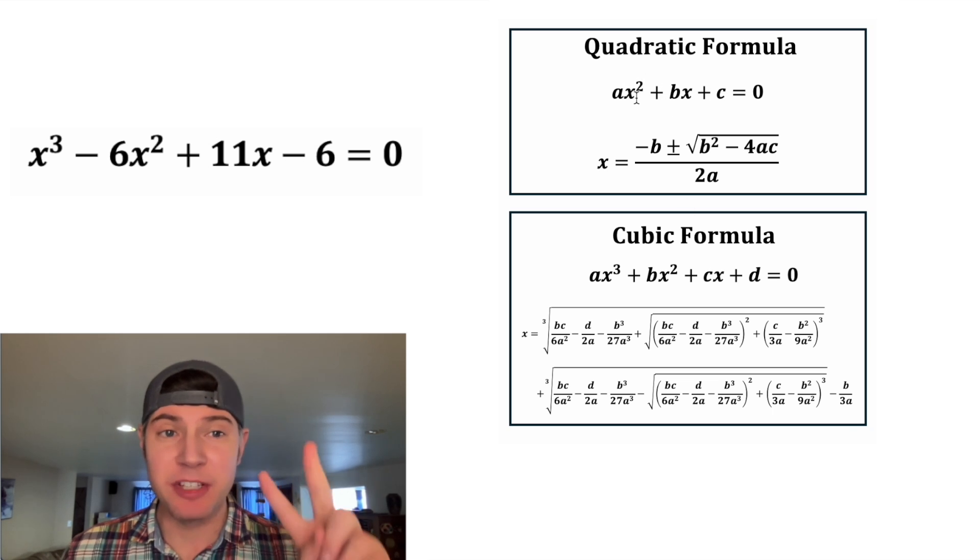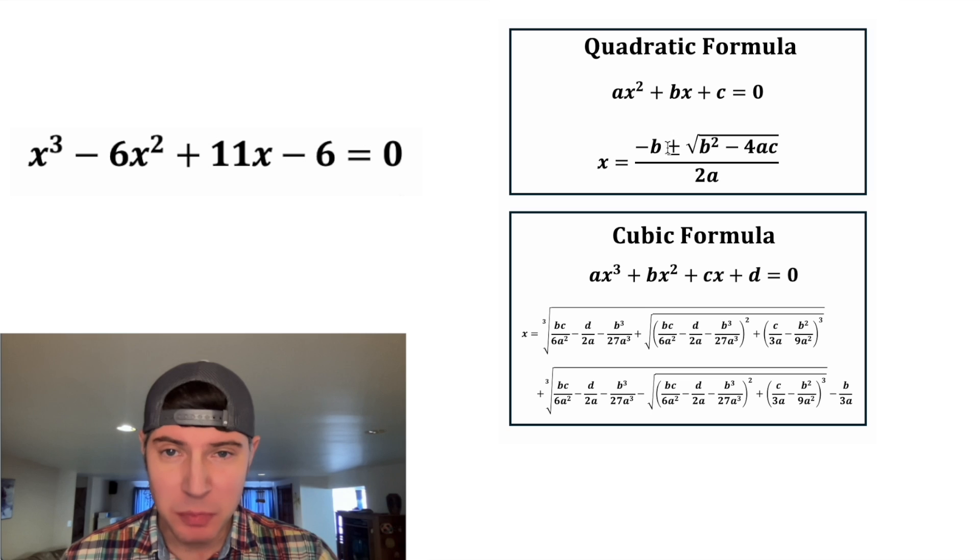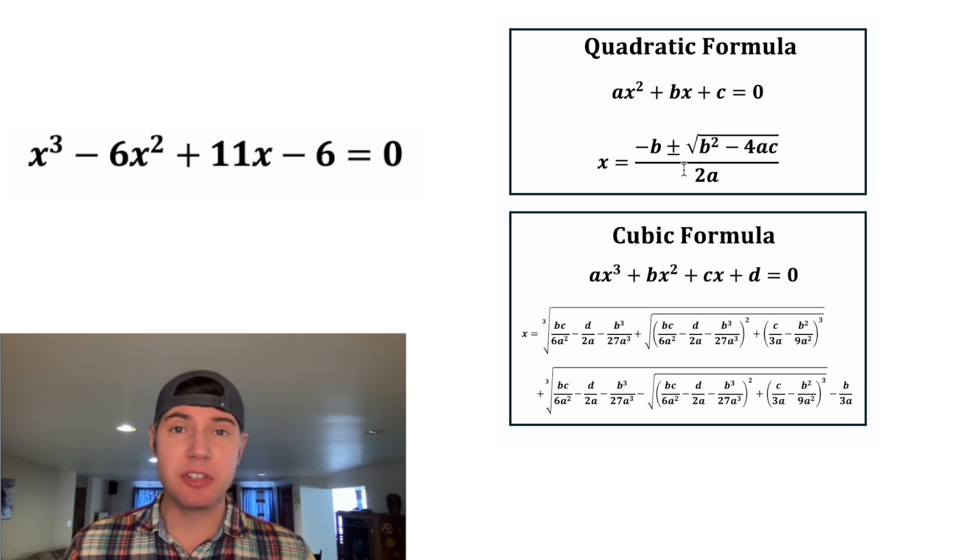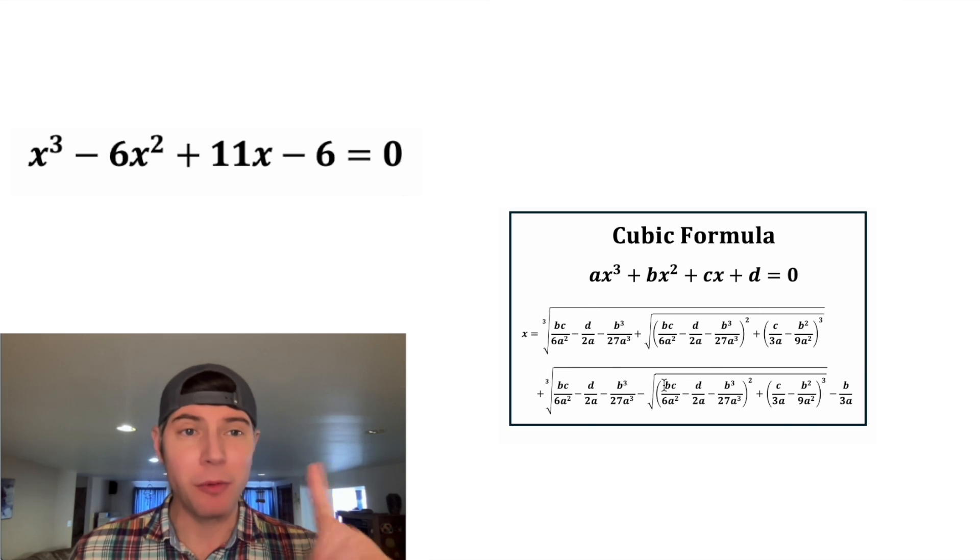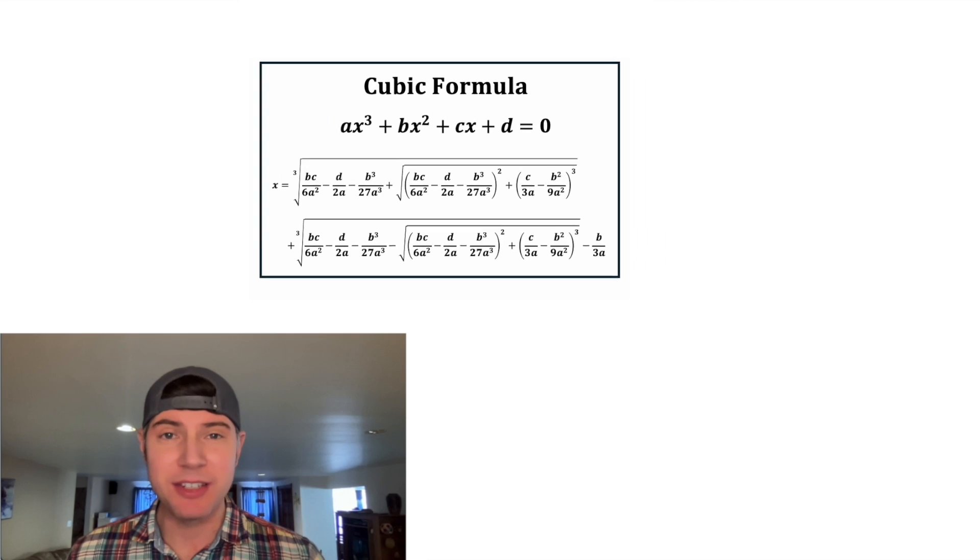And since it's degree 2, that means there are two solutions. And because of this plus minus right here, we're given both solutions. In a cubic, it's degree 3. There are going to be three solutions. But after we do all this work, we're only ever going to get one of them. Which one would this give us?